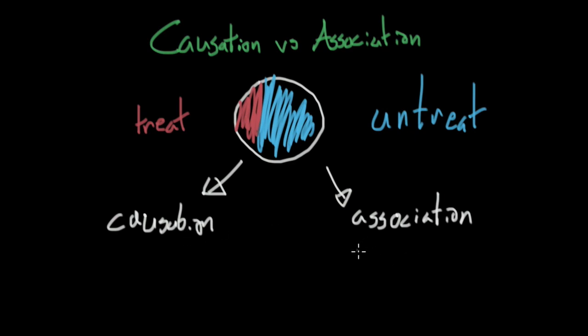Association, on the other side, is how are the outcomes related to the treatment or the untreatment. So, for example, in hospitals it's very likely to have unhealthy people, so hospitals are associated with being unhealthy, though they might not be causing the unhealthiness to begin with.